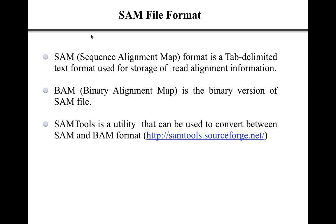Sequence aligners can be used to align read sequences onto the reference. The binary equivalent of the SAM file is called the Binary Alignment Map file, or BAM file. Both SAM and BAM contain similar information. The difference is that the SAM file is human readable, whereas the BAM file is not, being a compressed binary version of the SAM file.